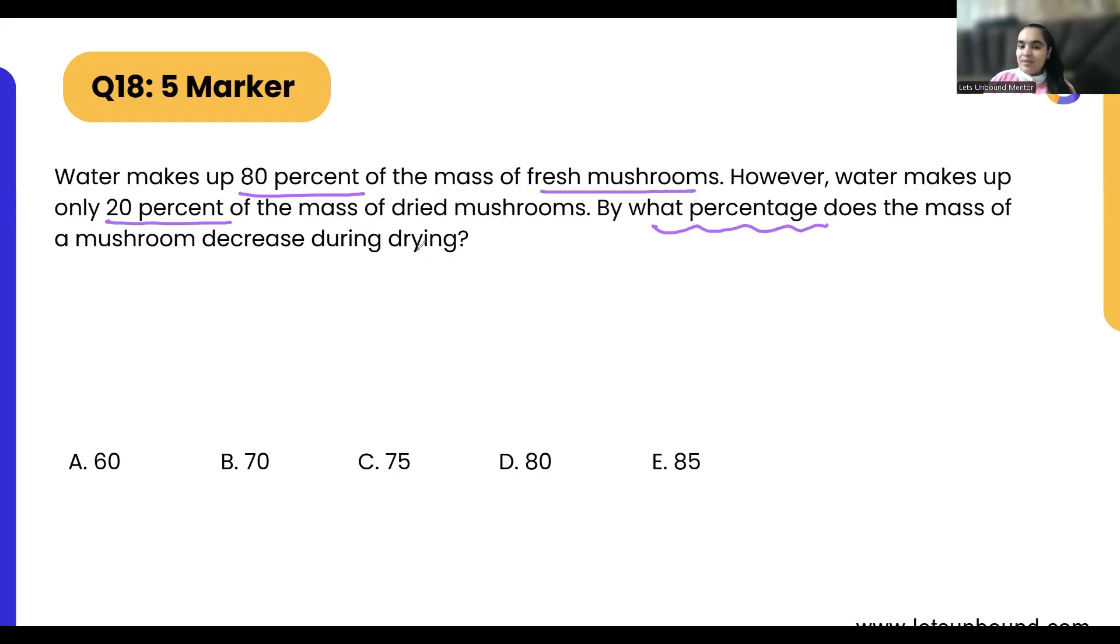So here we are having two different types of mushrooms, right? We are having fresh mushrooms and we are having dried mushrooms. Just for better understanding, let me draw fresh mushroom over here and let me draw dried mushroom over here. Now, let's assume that fresh mushrooms are having overall weight of x grams, and the same way let's assume dried mushrooms are having the mass of y grams, the overall mass.